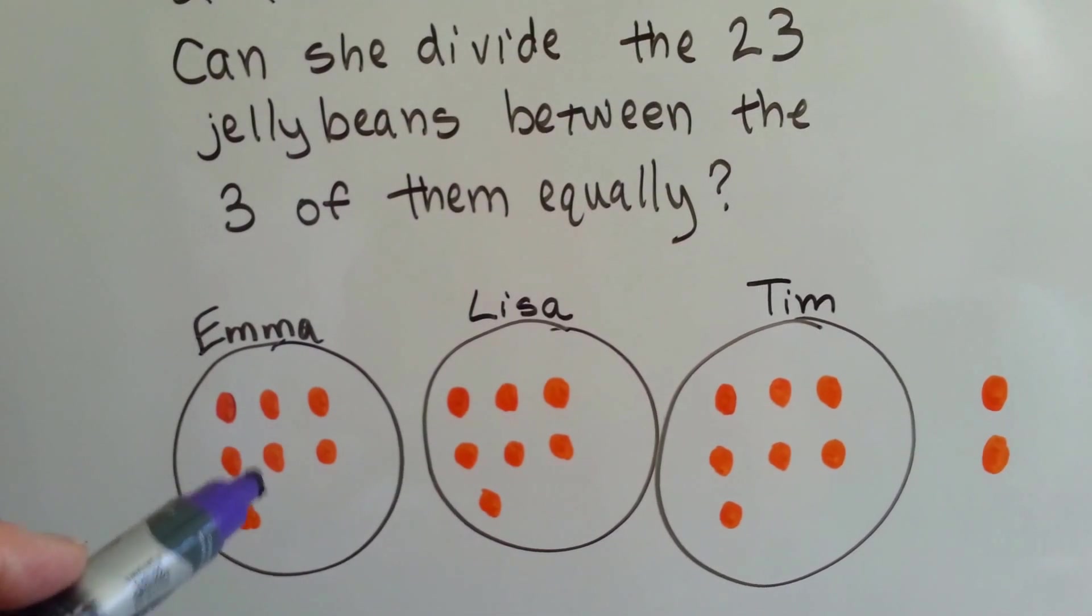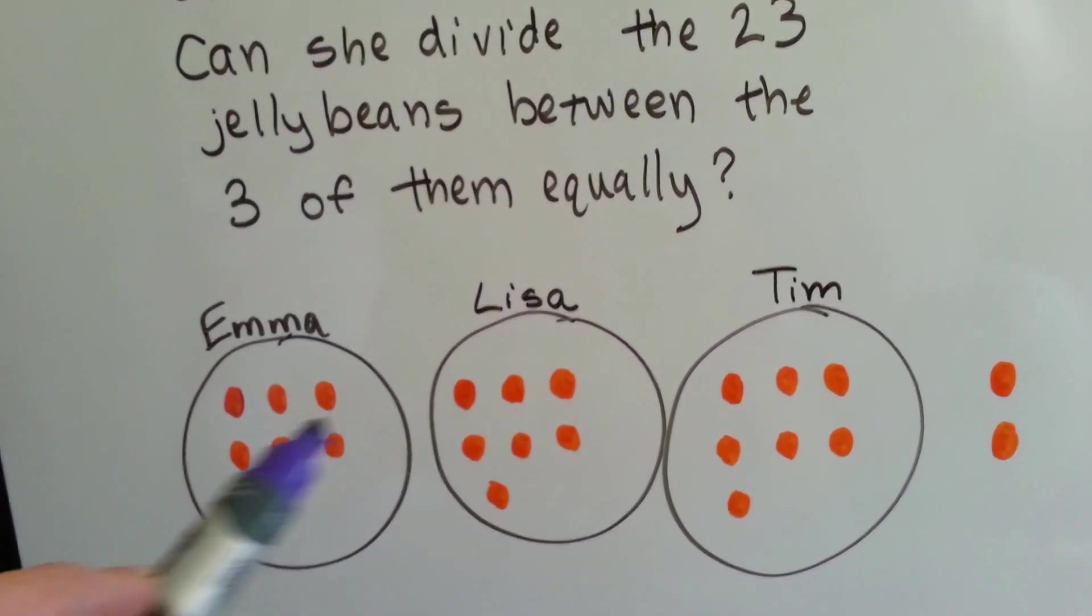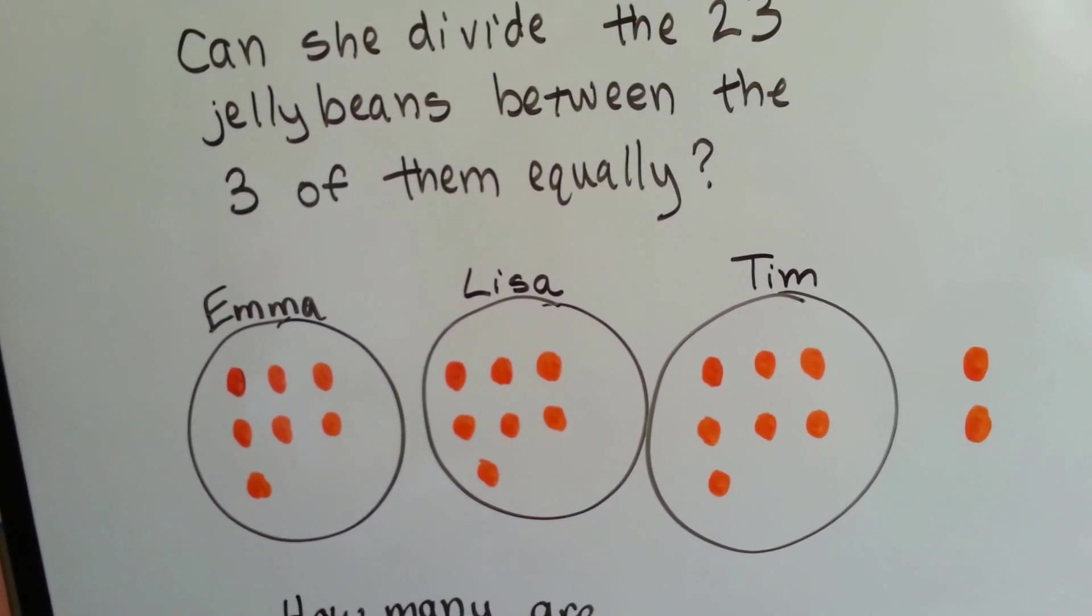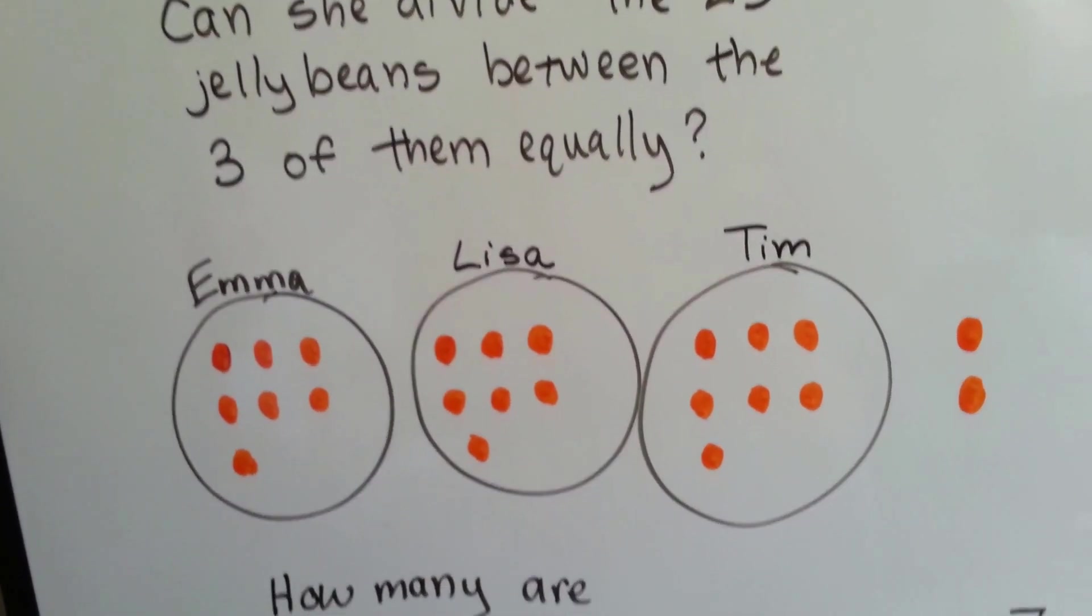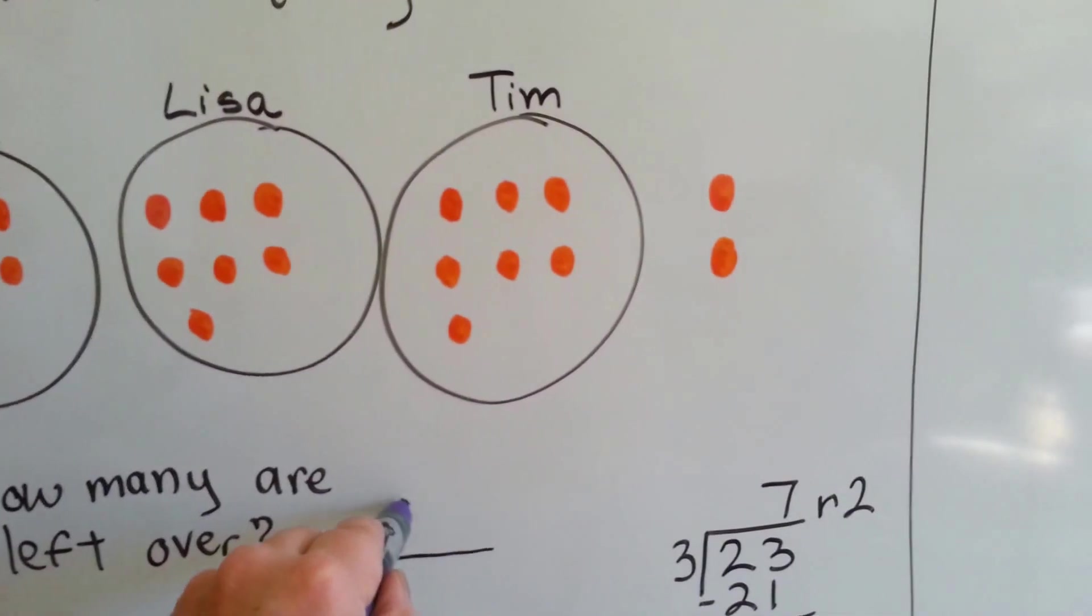Here's Emma and her two friends, Lisa and Tim. She gives each of them 7. 6 and one more is 7. So they all equally have 7. But she has 2 left over, and it wouldn't be fair to give one friend more than the other. So how many are left over? The 2, and the 2 is our remainder.